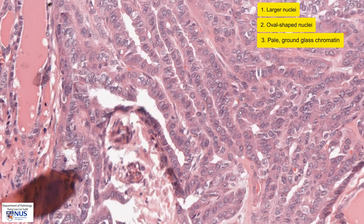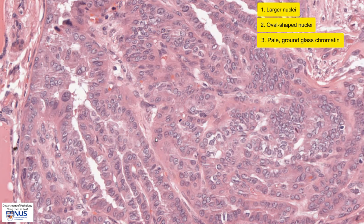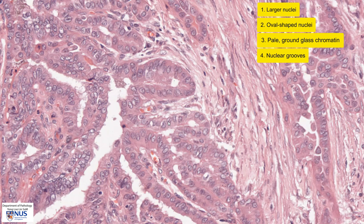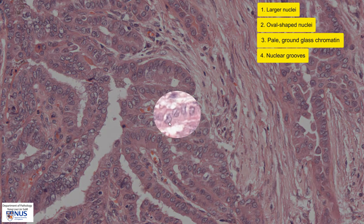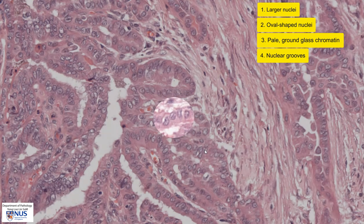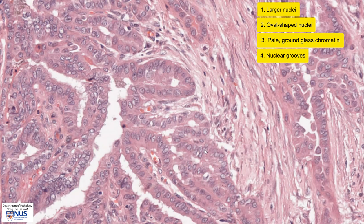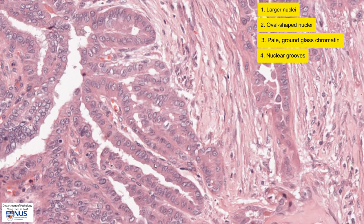Another important feature that we can see is the presence of nuclear grooves. In this area, we can see a very beautiful longitudinal groove running throughout the length of the nucleus, and we can see another one here, and yet another one here. So these nuclear grooves are also very characteristic features of papillary thyroid carcinoma.